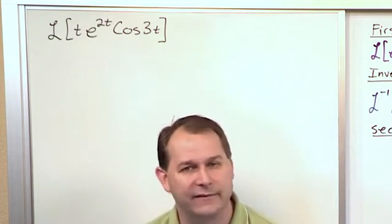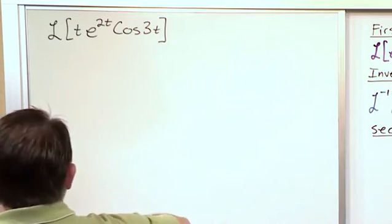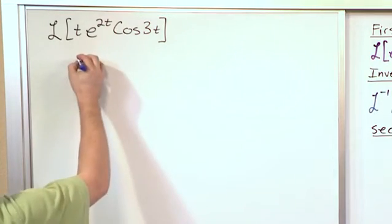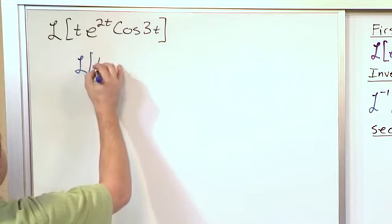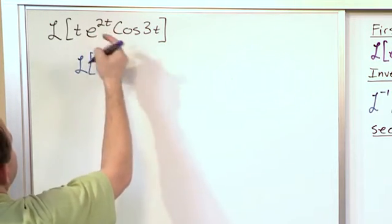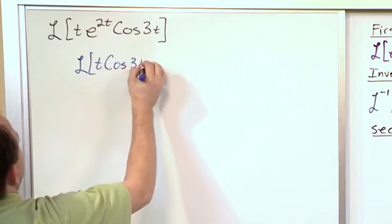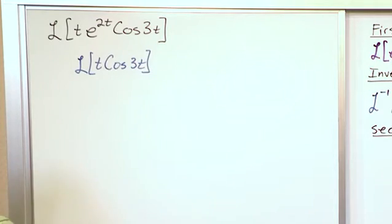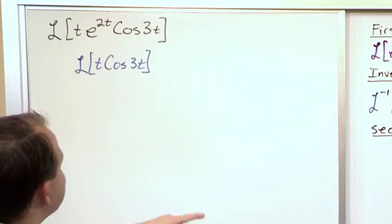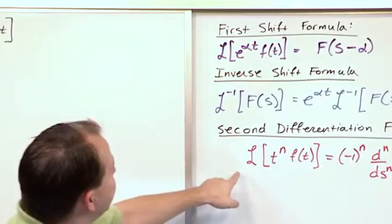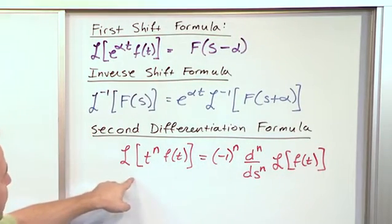If I look at everything left over, then I'm quickly going to realize that I actually know how to take the Laplace Transform of everything else left over, besides this exponential, which would be t times cosine 3t. It's not in my table, but when I go over here and realize that I can use the second differentiation formula, then I become much happier.